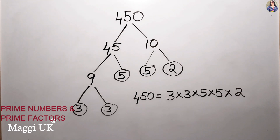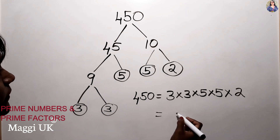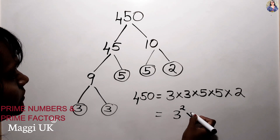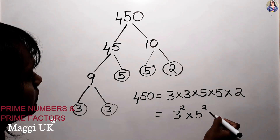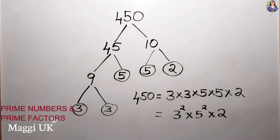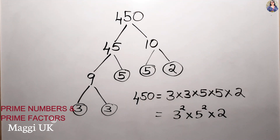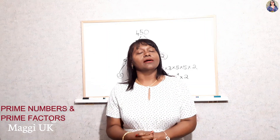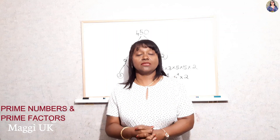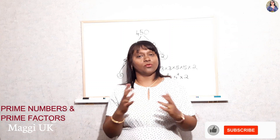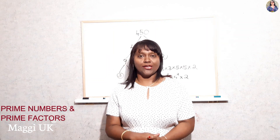Now writing the answer in index form: we have two 3s, so that's 3². We have two 5s, so that's 5². And we have only one 2, so that stays as 2. Therefore the index form is 3² × 5² × 2. Well done! Hope you understood this topic. If you have any doubts, please comment in the comment section. If you like my videos, please like, share, and subscribe. Don't forget the bell button. Until next time — Maggie signing off, bye!